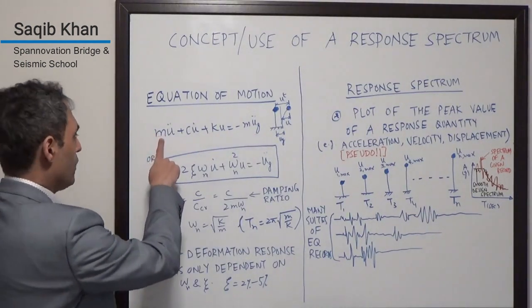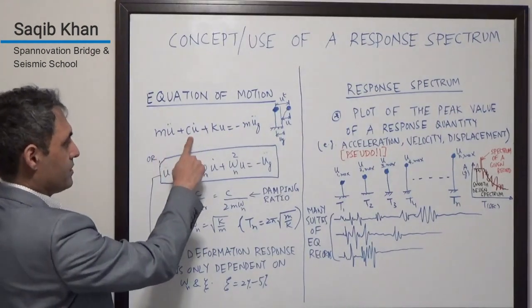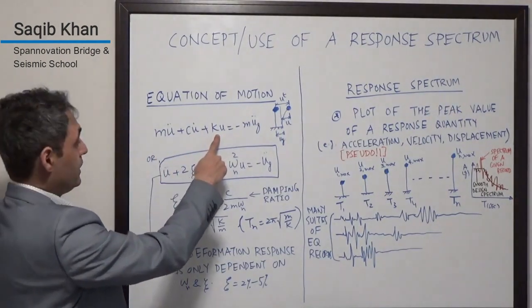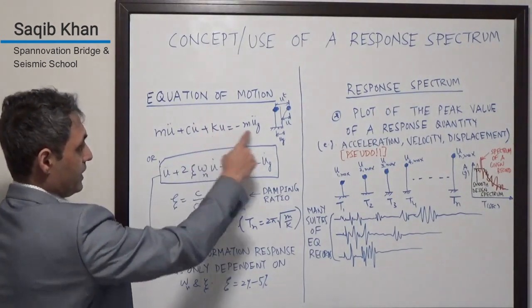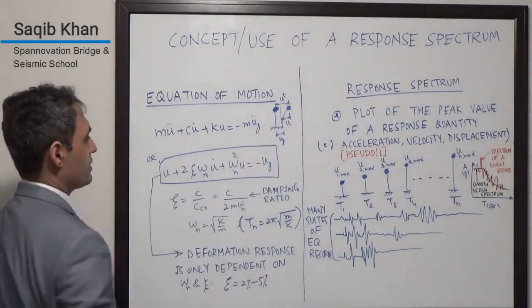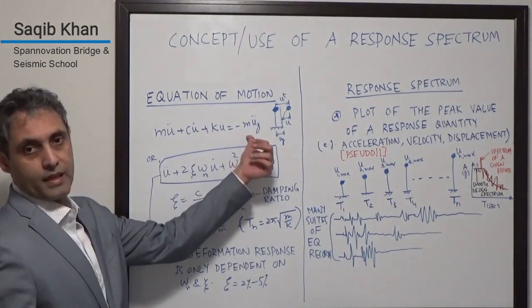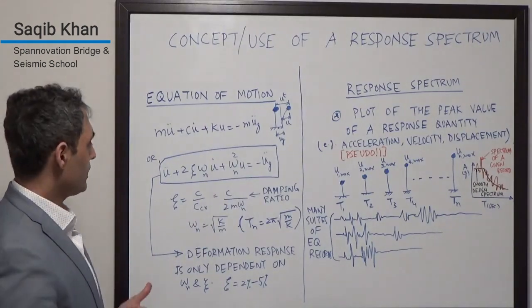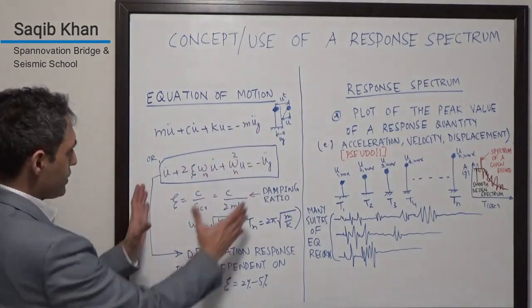This is the component for the acceleration of the mass. There is damping of the system and then the stiffness within the system. This you can think of as an effective force, which is mass times the acceleration of the ground. We can recast this equation in these terms.